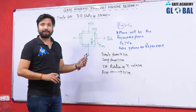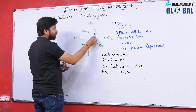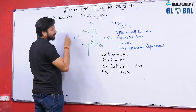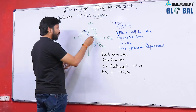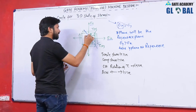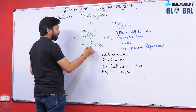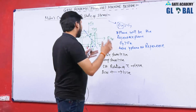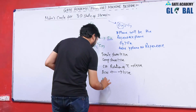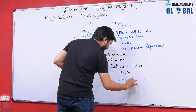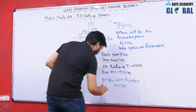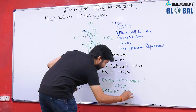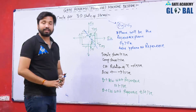With respect to the x plane, if theta is making a clockwise rotation, theta will be positive. If theta is causing an anti-clockwise rotation with respect to the reference plane, it is negative. Theta measured in the clockwise direction with respect to the reference is positive; theta measured in the anti-clockwise direction with respect to the reference is negative.